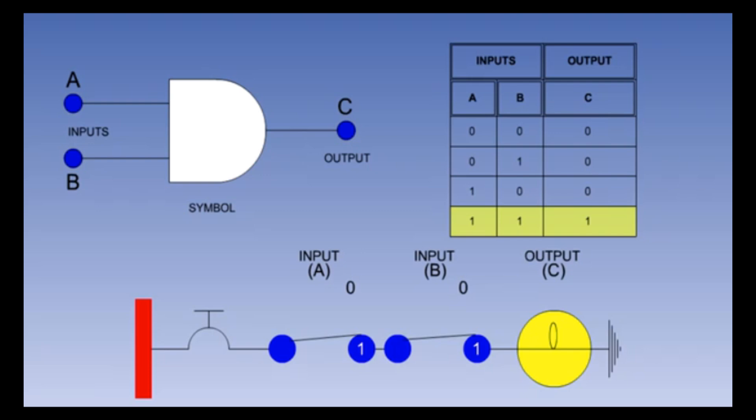Because all inputs to this gate need to be binary one to produce an output of binary one, this gate is sometimes referred to as the 'all or nothing' gate.